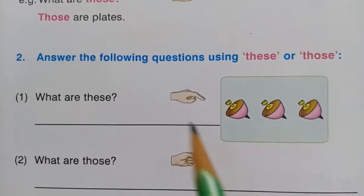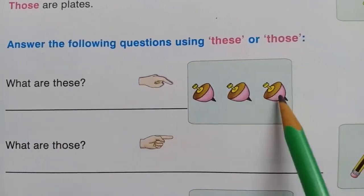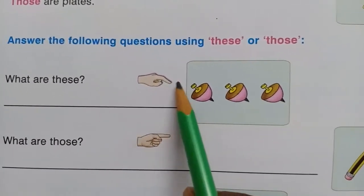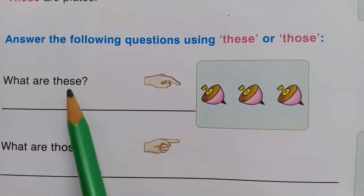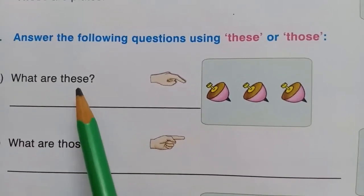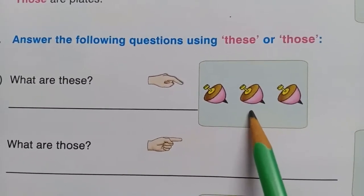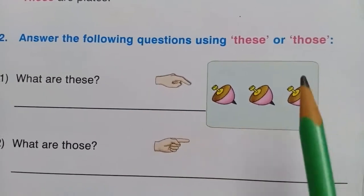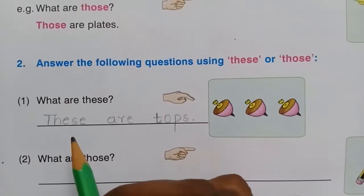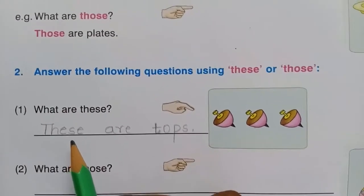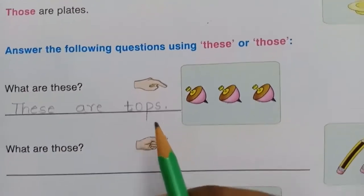First one: What are these? The objects are near, so we should use 'these'. What are these, children? These are tops. Very good. Let us write the answer: These are tops.